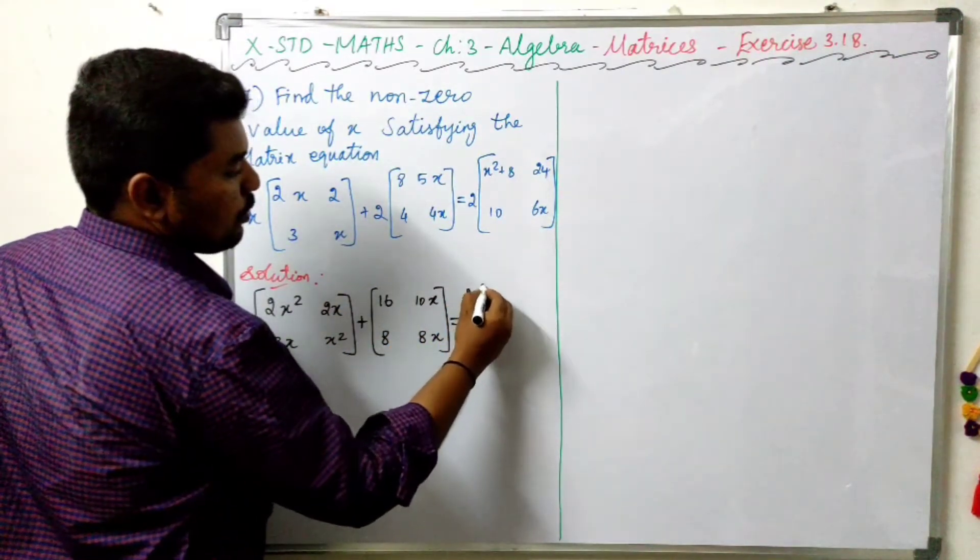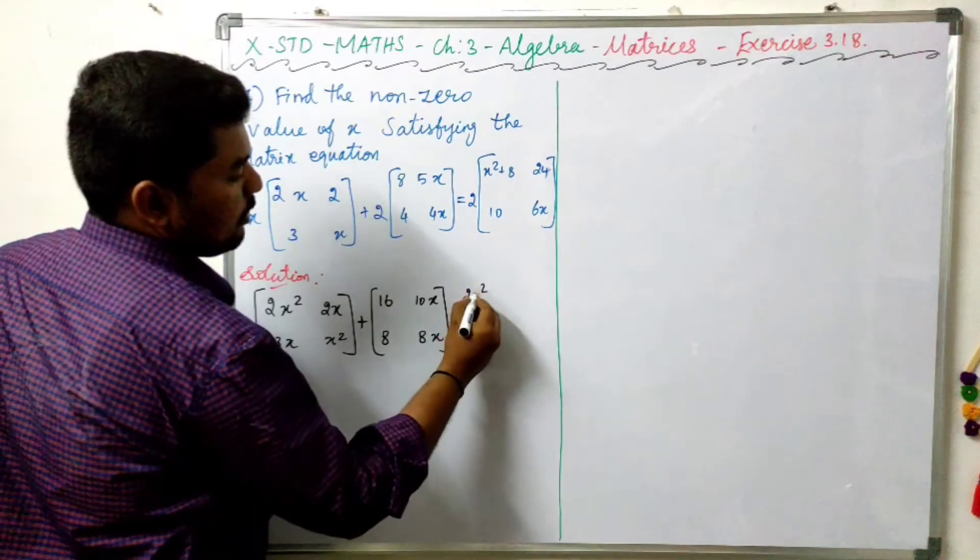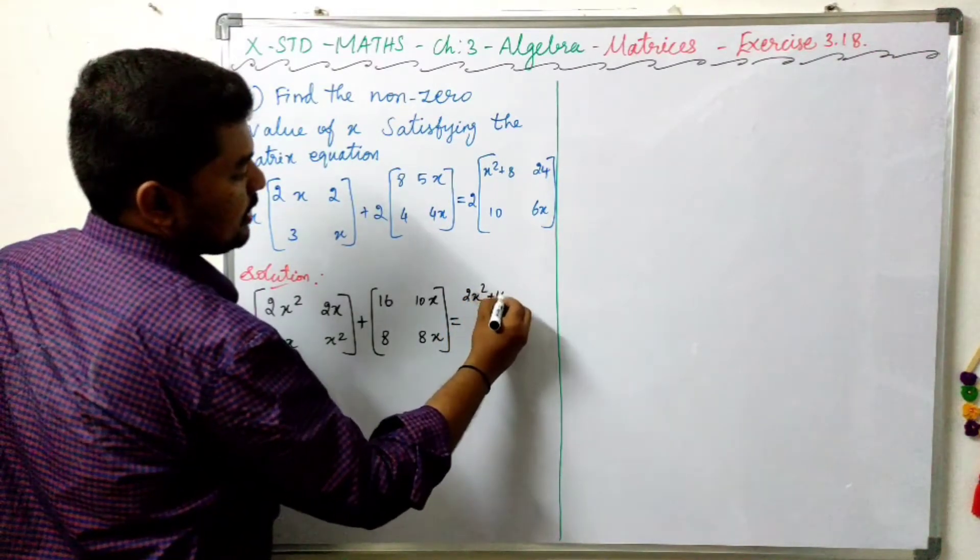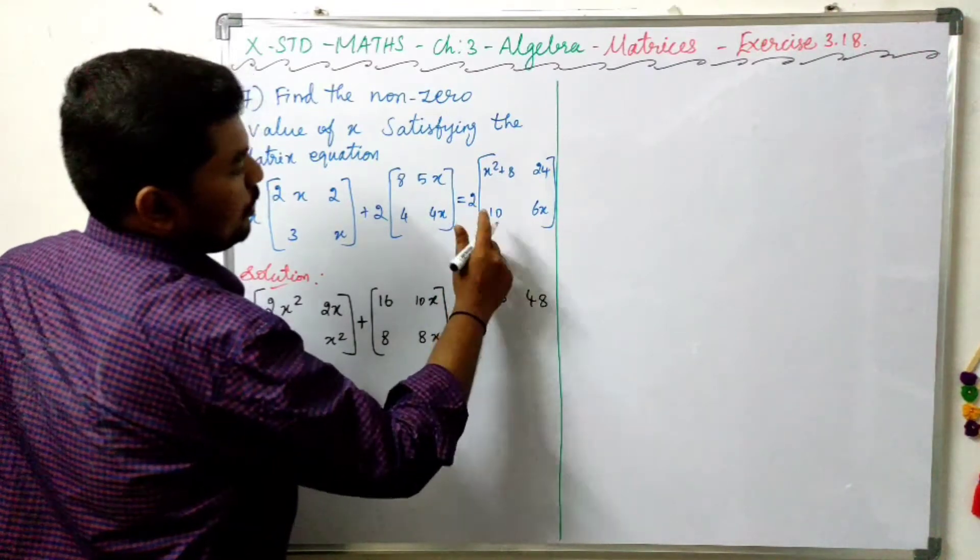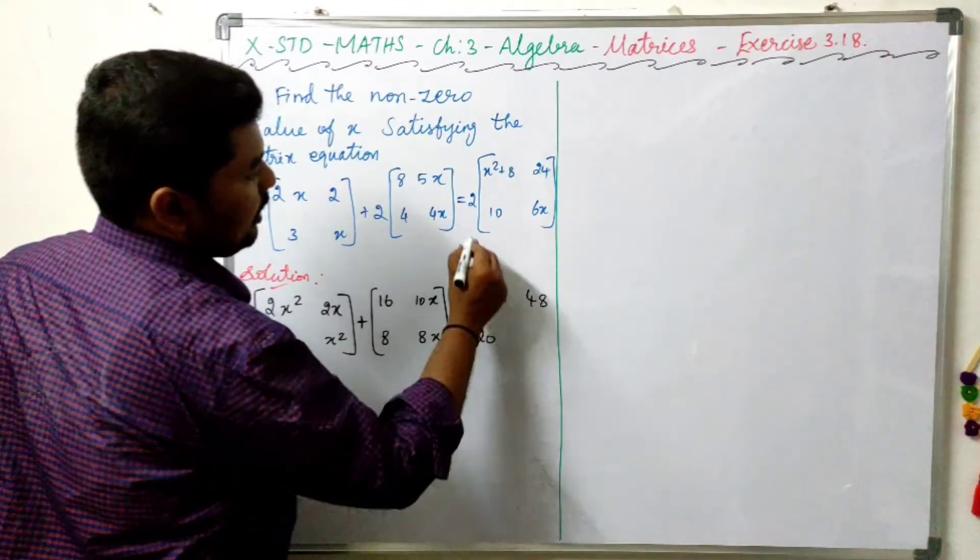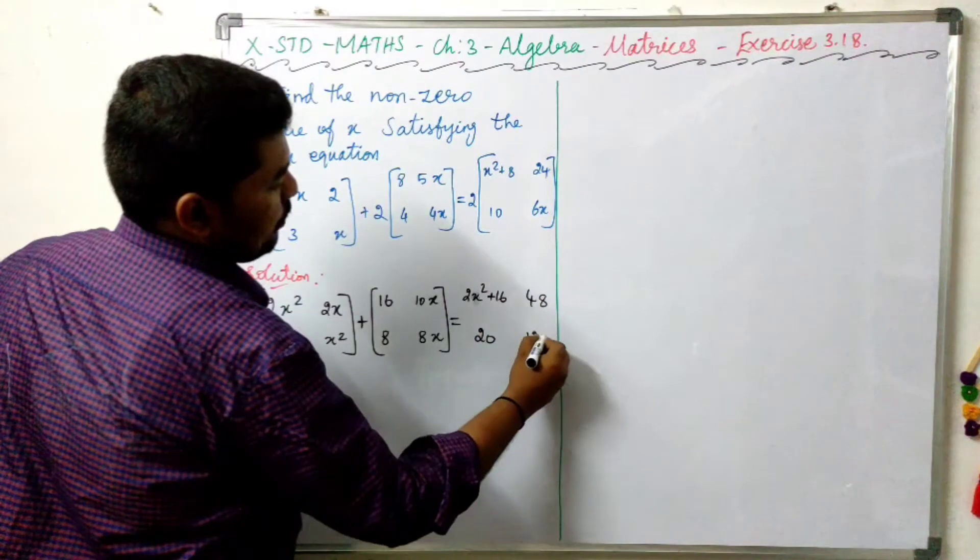So 2x square plus 2 times 8 is 16, 2 times 24 is 48, 2 times 10 is 20, 2 times 6 is 12x.